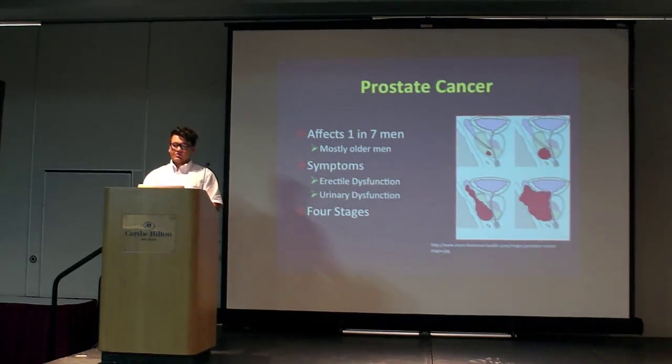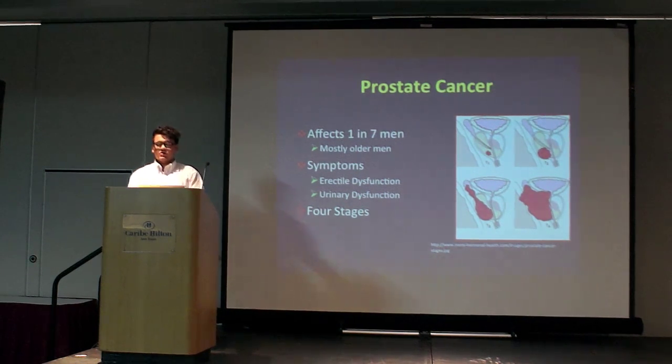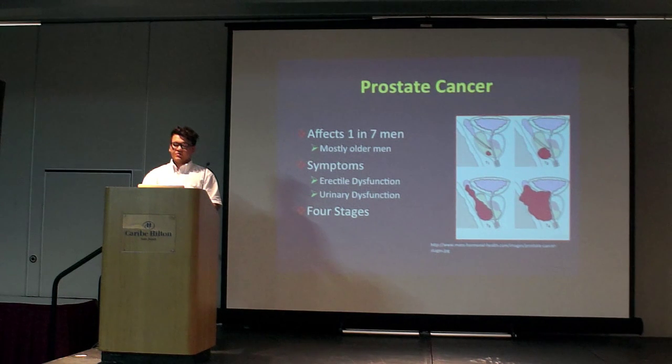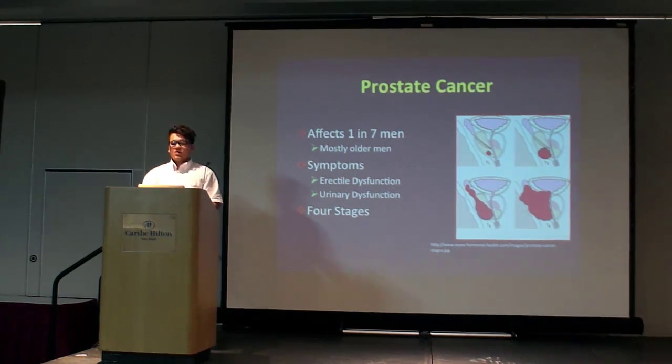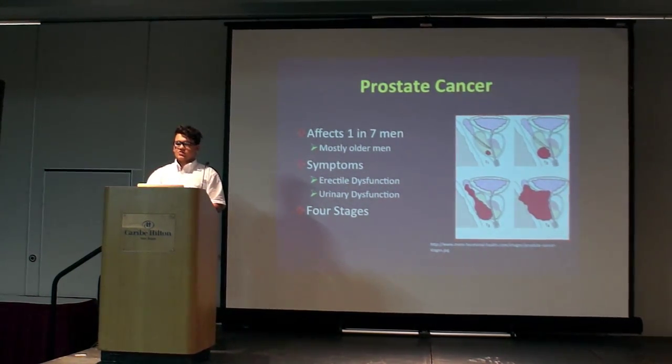Prostate cancer can be categorized in four different stages. T1, where the cancer is very small and barely noticed. T2 is large enough to be noticed, and T3, most of the organ has been overcome by the cancer. By the T4 stage, the cancer has metastasized.